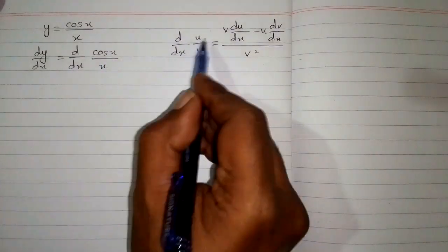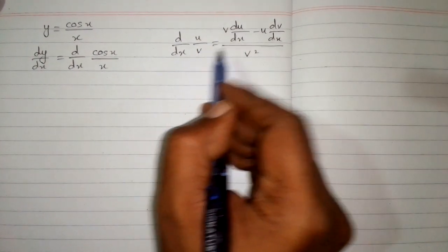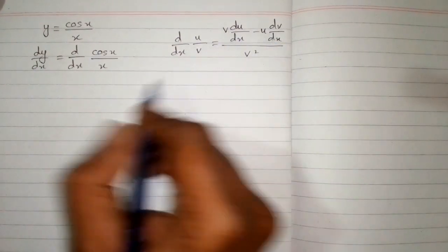Here we have cos x in place of u and x in place of v. So we will put the values of u and v in this formula.